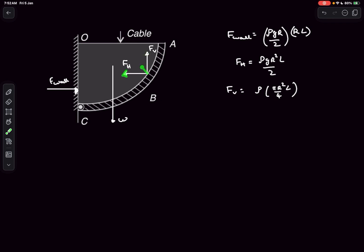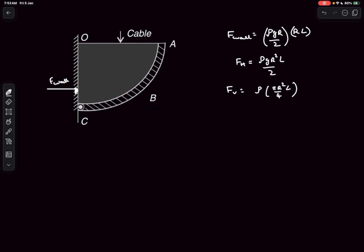Now we need to determine the line of action of the resultant force F. The claim is that this resultant must pass through the center point O. For any small area of the fluid element, the force the plate applies on the fluid is normal to the surface, and since the surface is circular, that normal must pass through the center. So the resultant of FV and FH passes through O. Calling the angle θ, we can write tan θ = FV / FH, which works out to π/2.